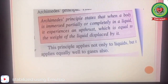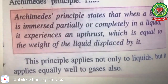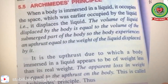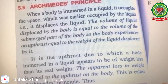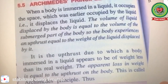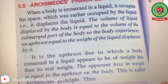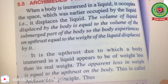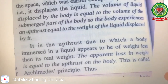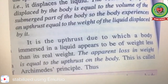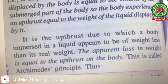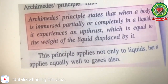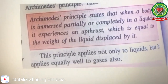Archimedes principle states that when a body is immersed partially or completely in a liquid, it experiences an upthrust which is equal to the weight of the liquid displaced by it. When a body is immersed in a liquid, it occupies the space which was earlier occupied by the liquid — that is, it displaces the liquid. The volume of the liquid displaced equals the volume of the submerged part of the body. Due to upthrust, a body immersed in a liquid appears to have less weight than its real weight; the apparent loss in weight equals the upthrust. This principle applies not only to liquids but equally well to gases.